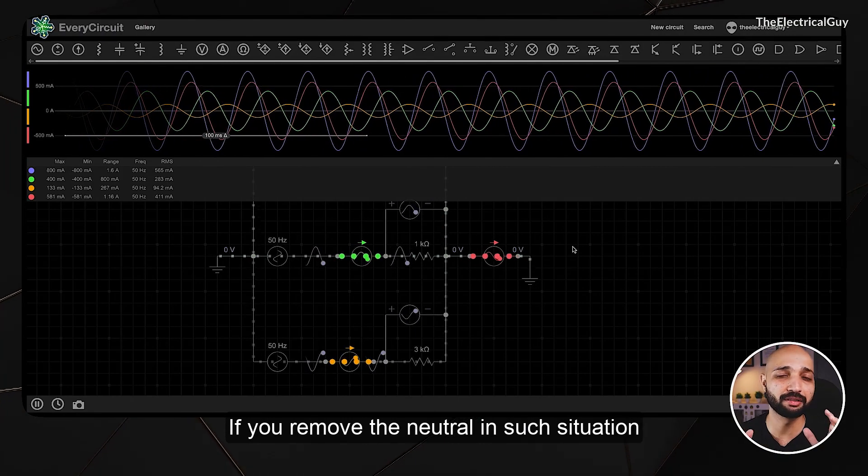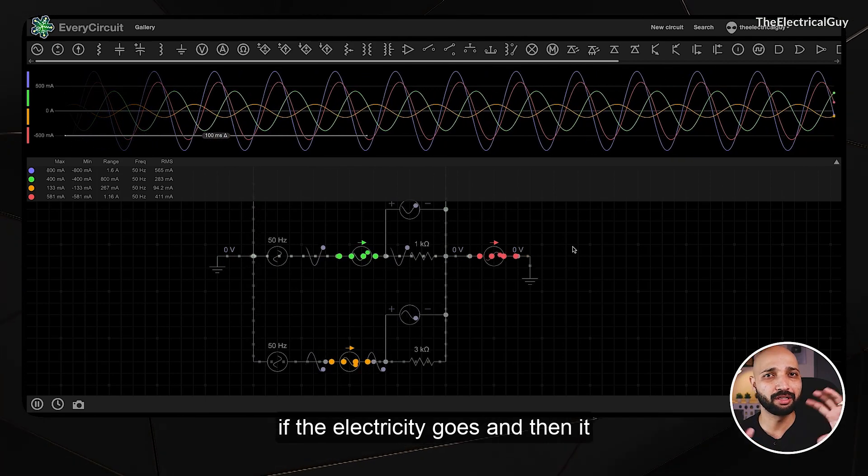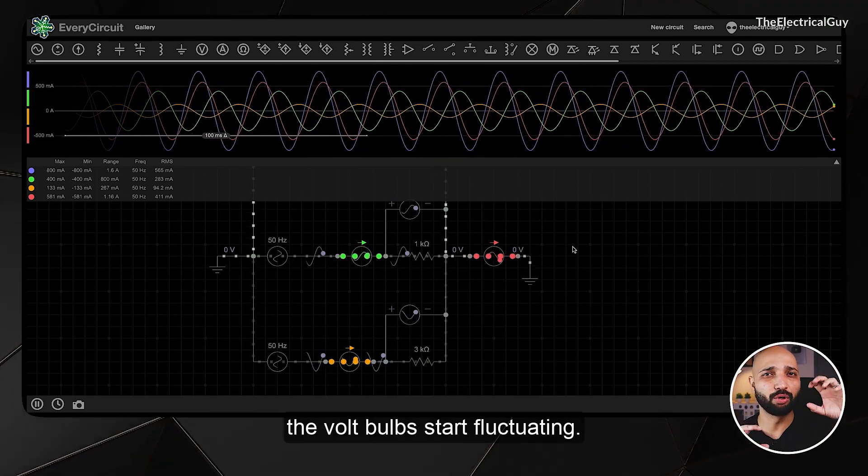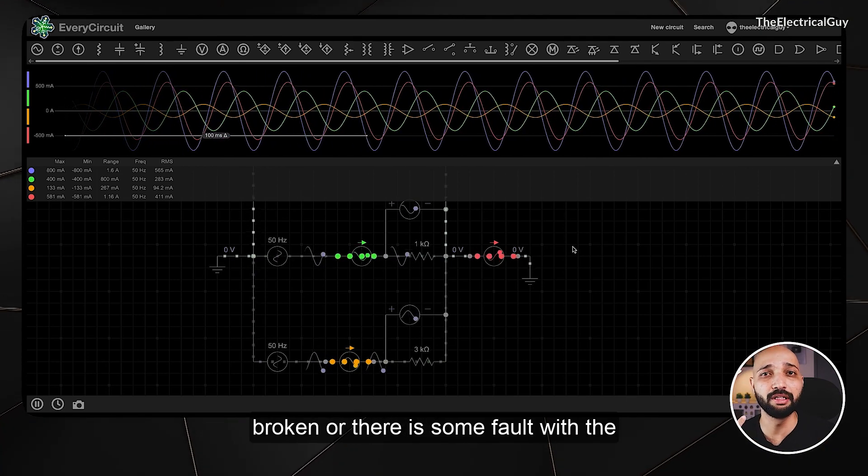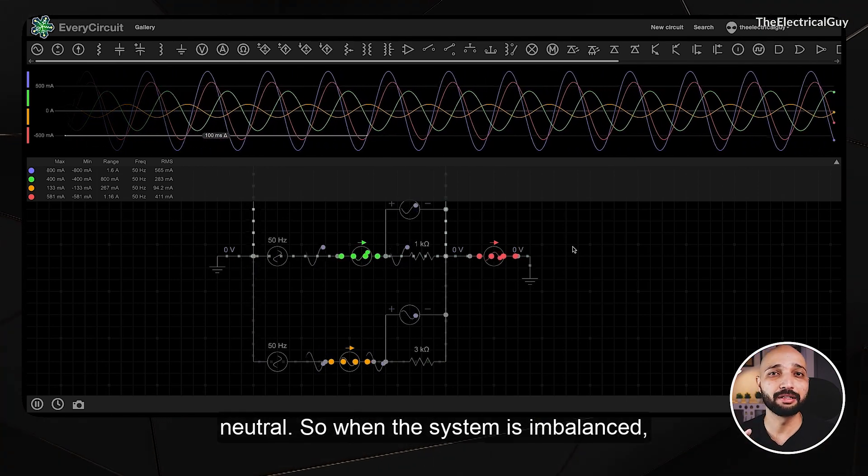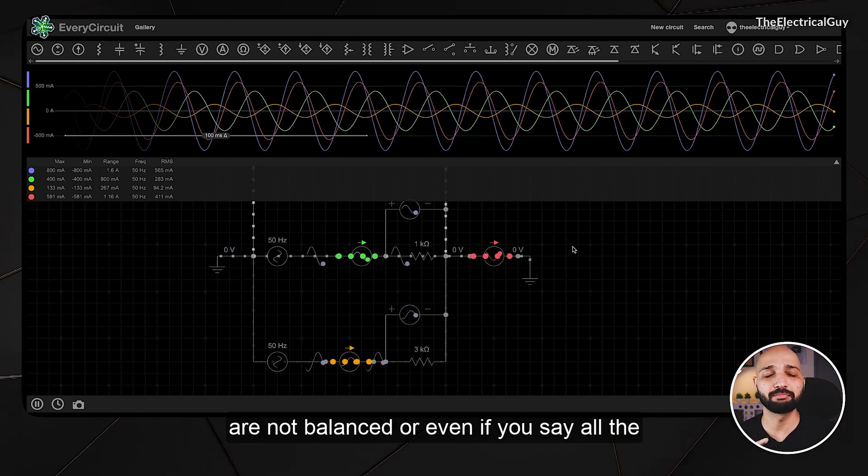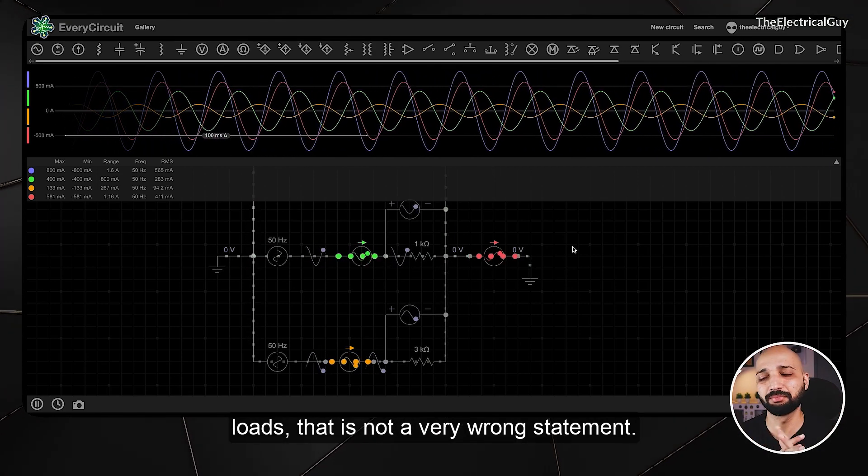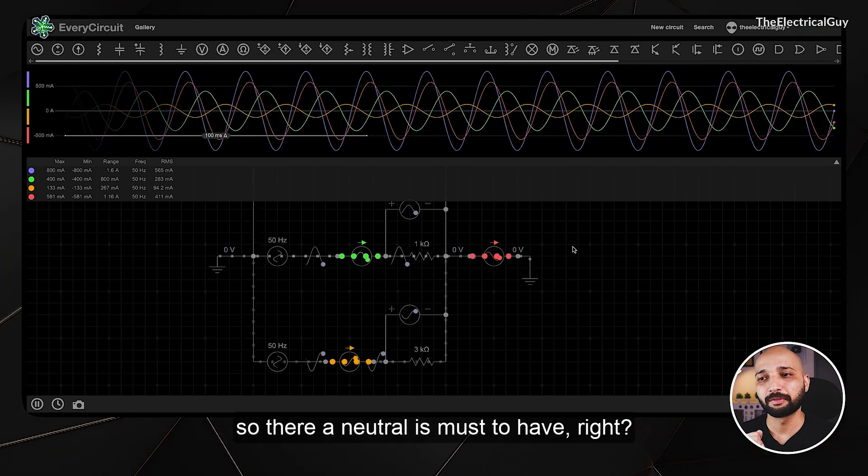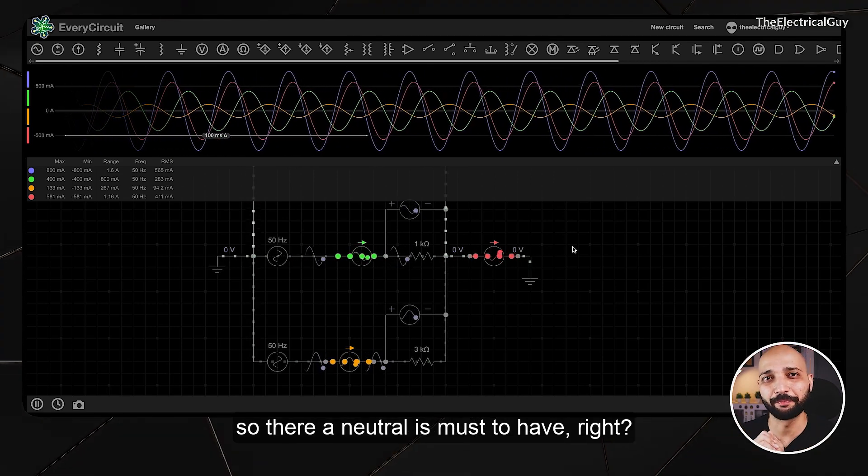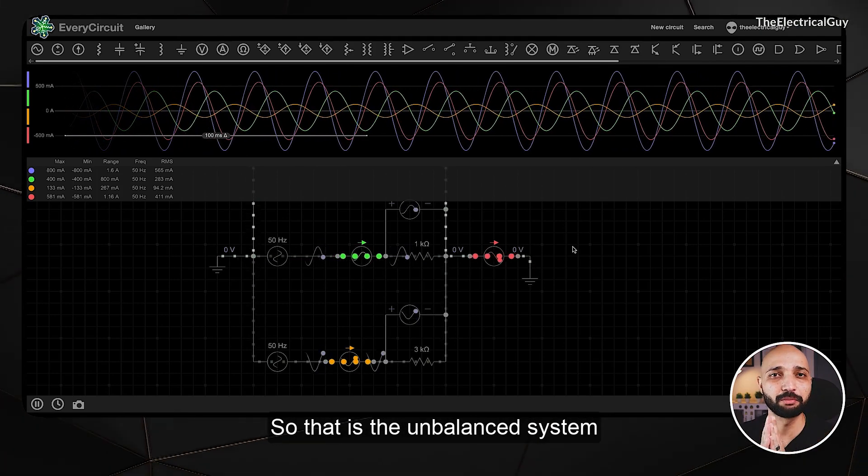You notice the waveform - very bad, completely disturbed - and in such situation a neutral is a must. If you remove the neutral in such situation, you will notice the voltage imbalance. Even if you have noticed in your home, sometimes if the electricity goes and then comes back, there is some imbalance and the bulb starts fluctuating. One reason maybe the neutral is broken or there is some fault with the neutral. When the system is imbalanced, which is the practical case in the distribution, majority of the loads are not balanced. A neutral is a must to have. If you remove the neutral there will be consequences.